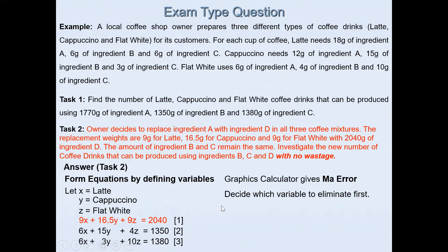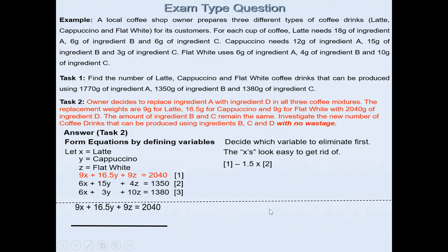It's easy to eliminate variable x. We'll multiply the second equation by 1.5 and then take it away from equation 1. So 9x + 16.5y + 9z = 2040, the first equation. If I multiply the second equation by 1.5, I will get 9x + 22.5y + 6z = 2025. To get rid of variable x, I will subtract the two equations. 16.5y - 22.5y gives you -6y, and 9 - 6z gives you 3z. 2040 - 2025 gives you 15. So that's our fourth equation.